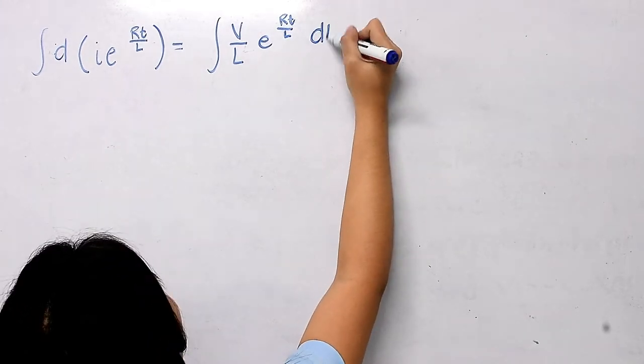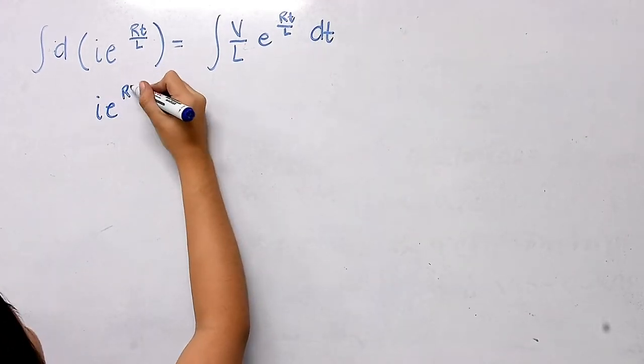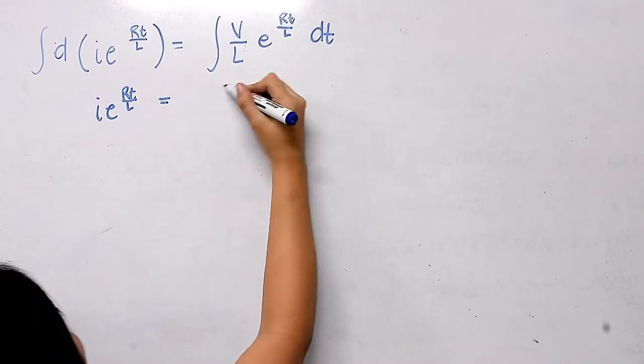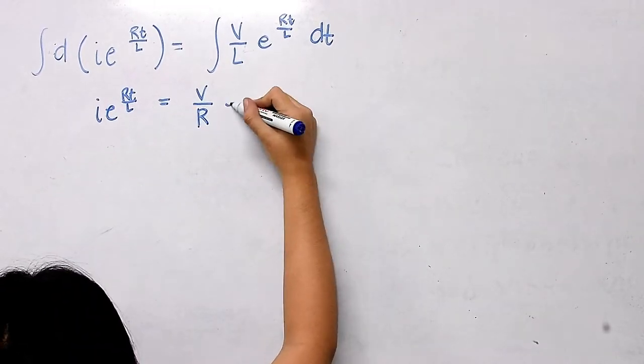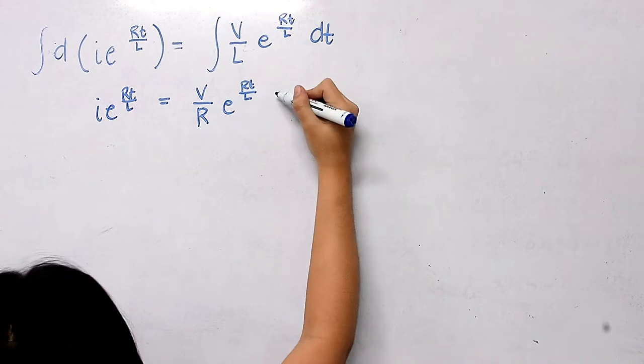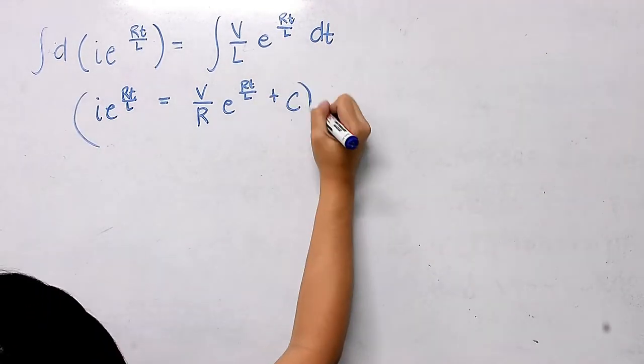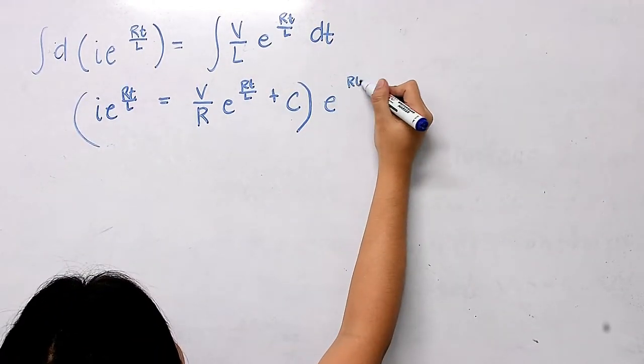The integration of i times e^(RT/L) is itself, while the integration of e^(RT/L) times V/L dt is (V/R)e^(RT/L) plus C.